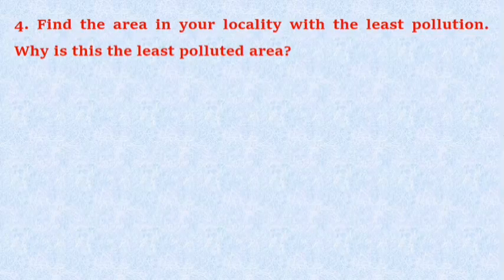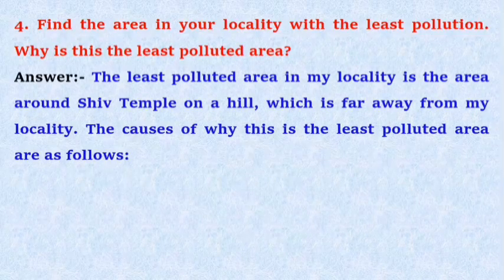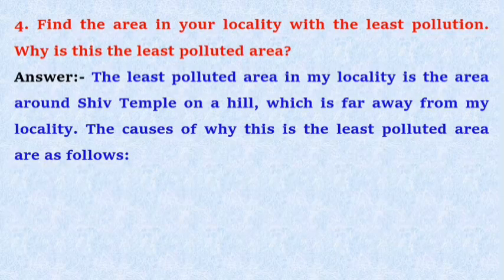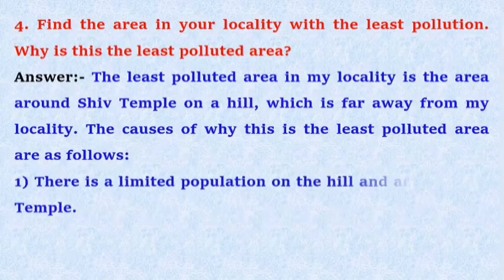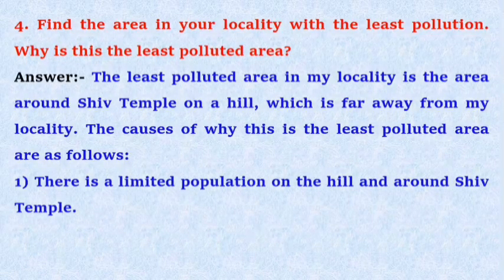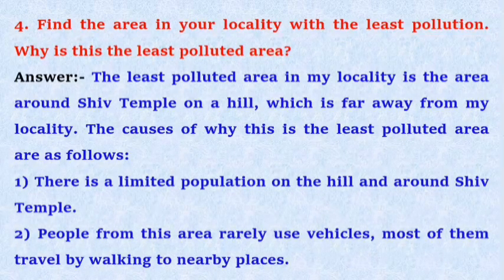Question no. 4: Find the area in your locality with the least polluted road. Why is this the least polluted area? Answer: The least polluted area in my locality is the area around two temples on a hill, which is far away from my locality. The causes are: 1. There is a limited population on the hill and around the two temples. 2. People from this area rarely use vehicles. Most of them travel by walking to nearby places.